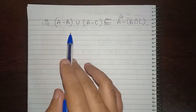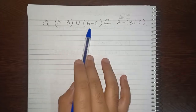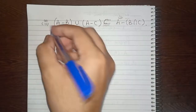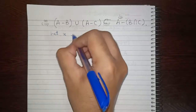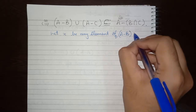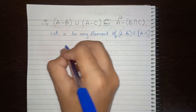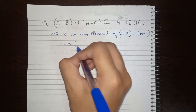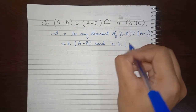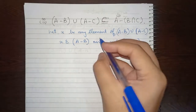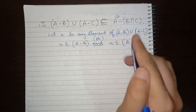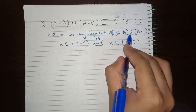So this is the RHS of that problem, and we have to prove that this RHS is also a subset of the LHS. Following the standard steps, we say: let X be any element of (A minus B) union (A minus C). Then X belongs to (A minus B) OR X belongs to (A minus C). Keep in mind we write OR here because we are working on difference of sets, so the sign's value changes in these questions.